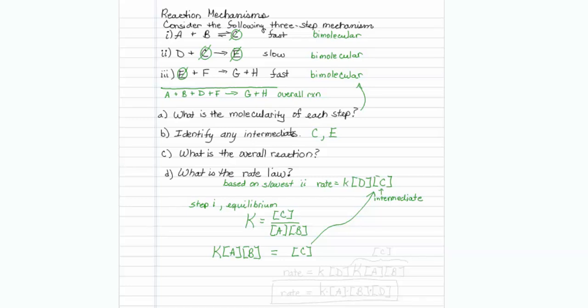So my rate will actually be equal to k, and I can use D, but then I should have the equilibrium constant A, B. So I have substituted for C this other expression.